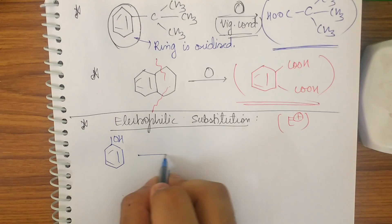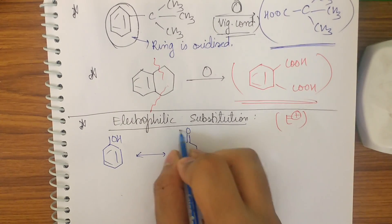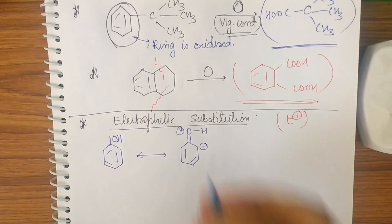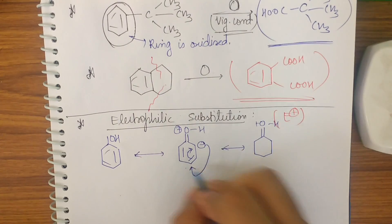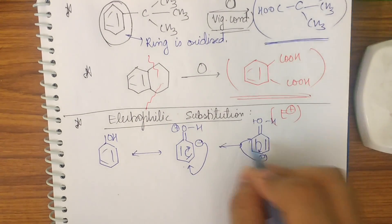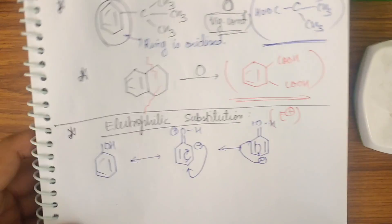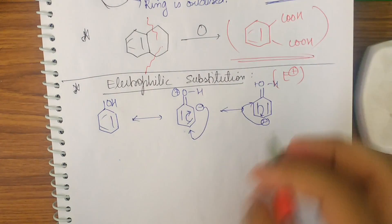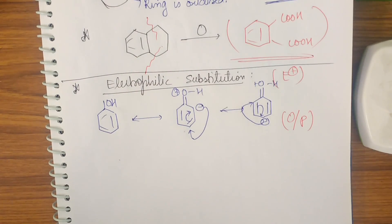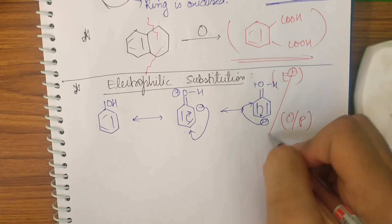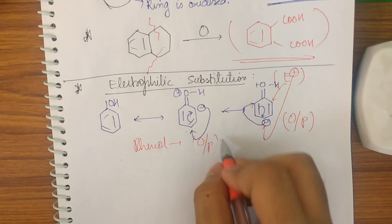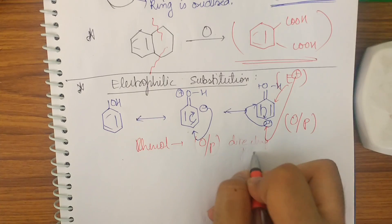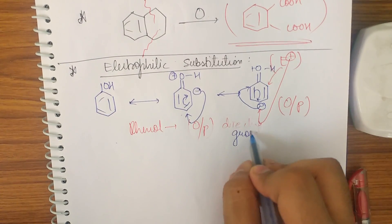For phenol: drawing resonance structures, the lone pair on oxygen delocalizes into the ring. The negative charge in resonance goes to the ortho and para positions, making those positions electron-rich. Since an electrophile attacks electron-rich positions, phenol is an ortho/para directing group.